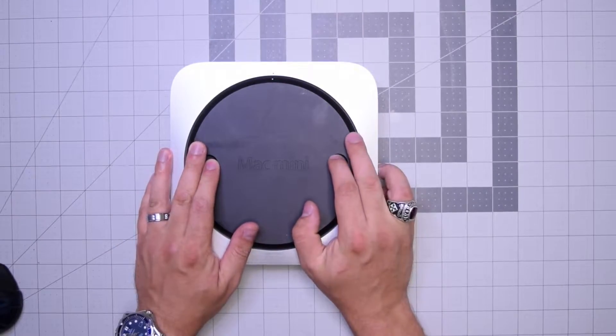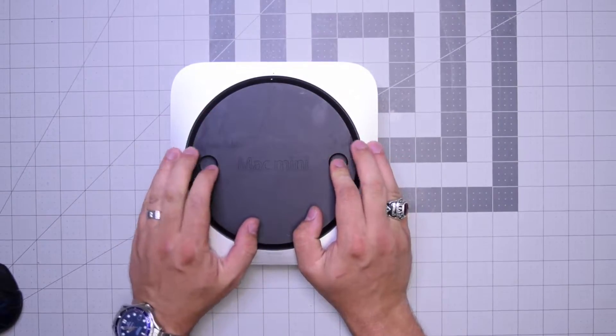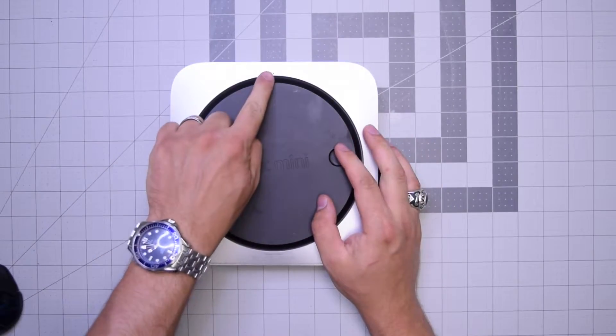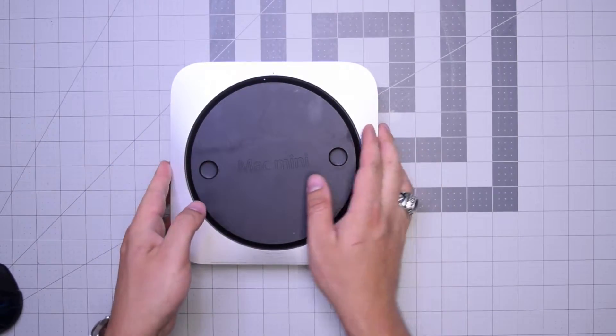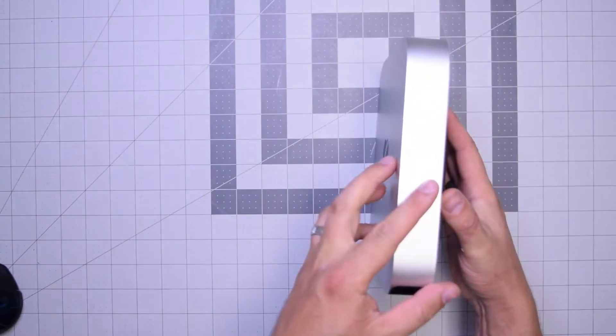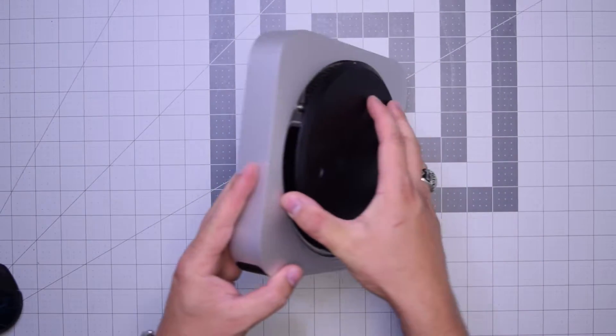What we want to do is put both fingers on the left and right and twist it counterclockwise about a quarter of an inch, and then we can tip the unit over and remove the rear cover.